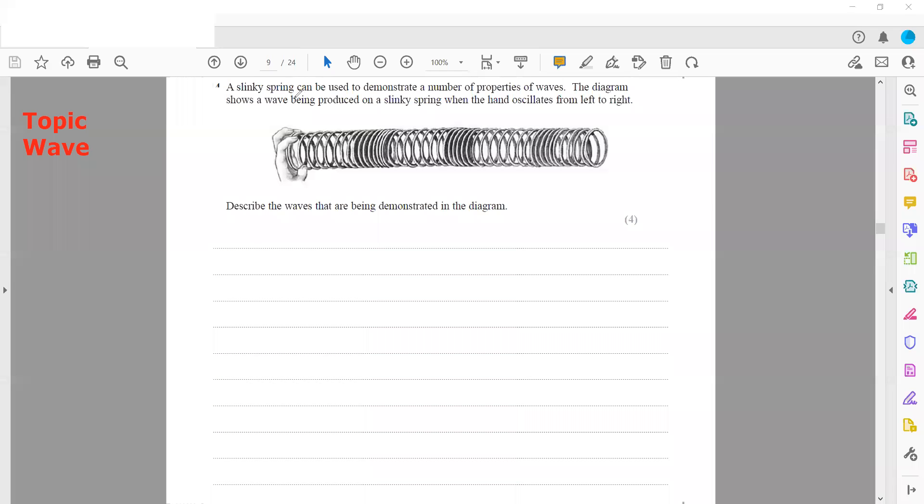The topic is related to waves. A slinky spring can be used to demonstrate a number of properties of waves. The diagram shows a wave being produced in a slinky spring when the hand oscillates.